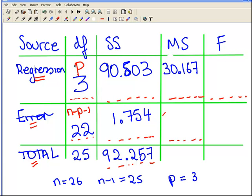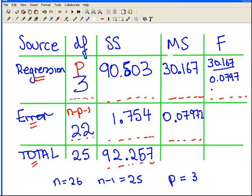With calculator work, I get 0.0797. Now, the F statistic test statistic is the ratio of means, so I divide 30.167 divided by 0.0797. The answer I get is 378.41 approximately. So that is my F table all completed.